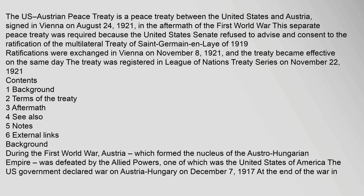The U.S.-Austrian Peace Treaty is a peace treaty between the United States and Austria, signed in Vienna on August 24, 1921. In the aftermath of the First World War, this separate peace treaty was required because the United States Senate refused to advise and consent to the ratification of the Multilateral Treaty of Saint-Germain and Ley of 1919. Ratifications were exchanged in Vienna on November 8, 1921, and the treaty became effective on the same day. The treaty was registered in the League of Nations Treaty Series on November 22, 1921.